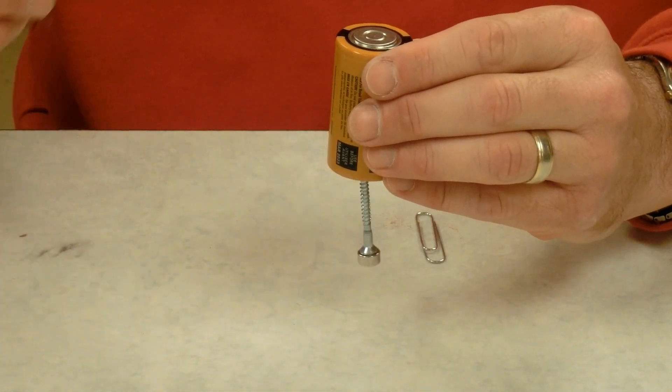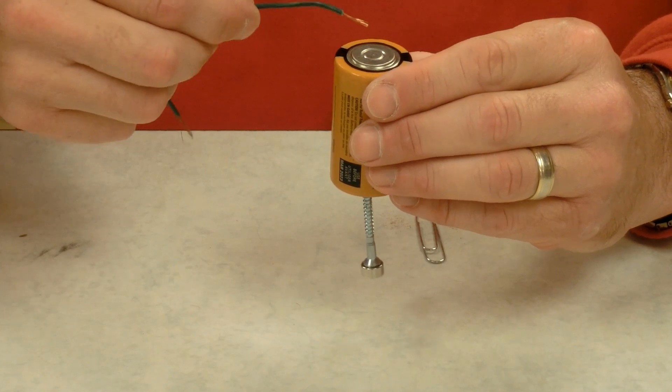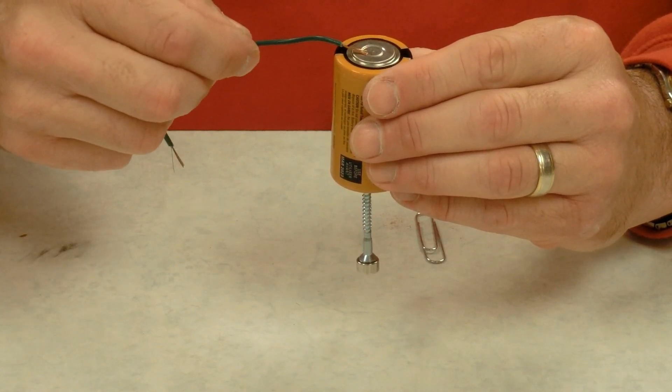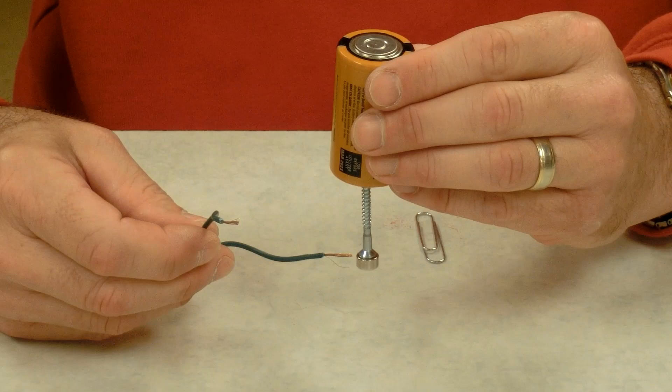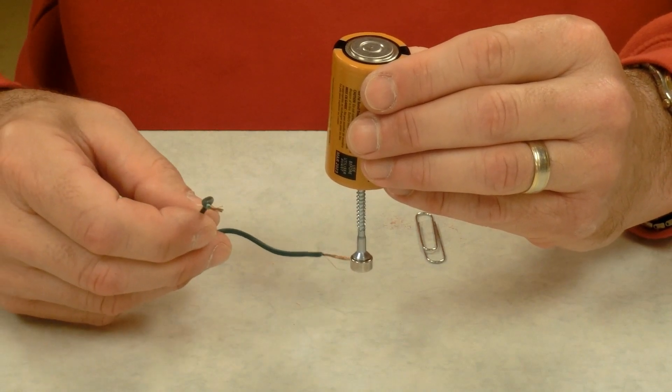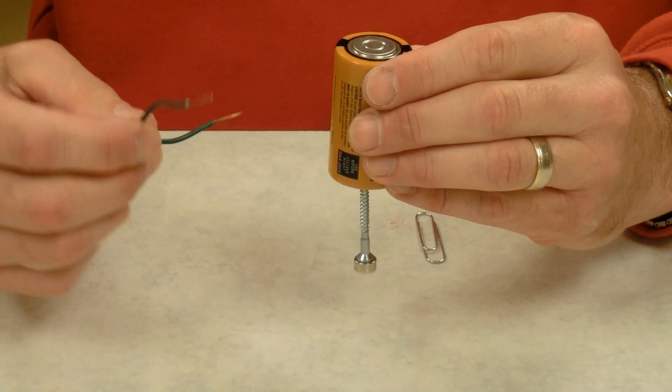So now I'm going to run current from the negative of the dry cell through the side of the neodymium magnet and then through the magnet through the screw back around.